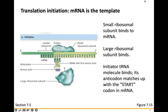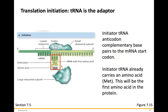In translation initiation, messenger RNA is the template. Small ribosomal subunits bind to messenger RNA, followed by the large ribosomal subunits. The initial transfer RNA molecule binds — its anticodon matches up with the start codon in messenger RNA, which will always be AUG, encoding methionine. The transfer RNA anticodon is UAC, the complement of AUG. That transfer RNA carries methionine, which will always be the first amino acid of the protein.